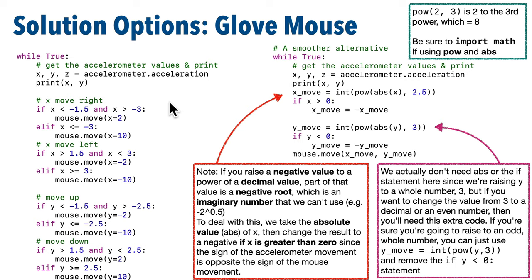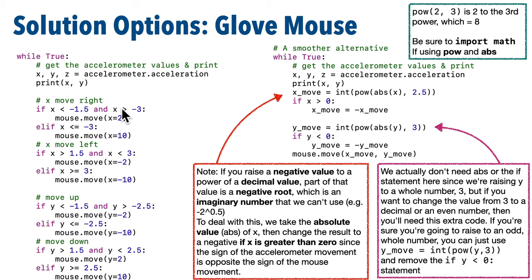On the left is how I originally handled scrolling — I found a range to scroll slowly between ±1.5 and 3 on the accelerometer's X value and 1.5 to 2.5 on Y, moving by 2 units in that range or by 10 if more extreme. This works, and if your code looks like this, you've met the challenge. But I knew I could do better for two reasons: this code results in stair-like movement by moving X then Y separately, and since there were only two mouse movement values — 2 and 10 — the glove movement was less fluid, jumping from 2 to 10 points without any scaling in between.